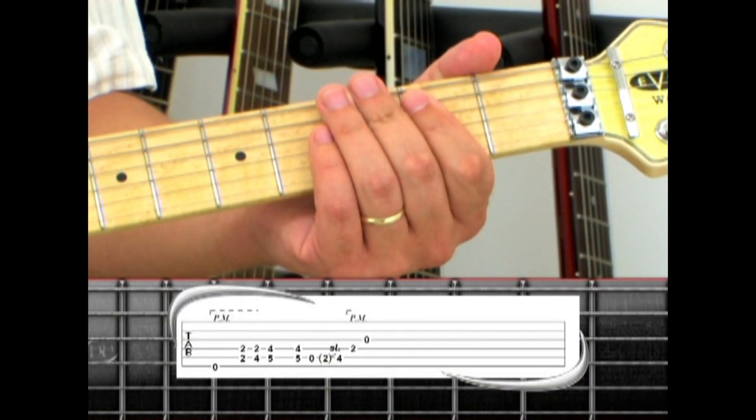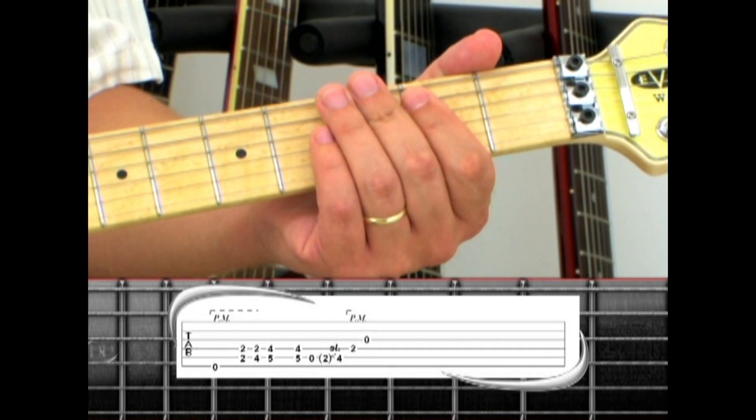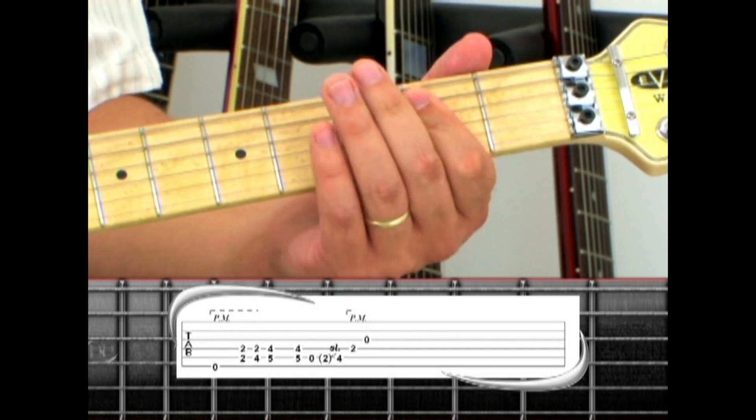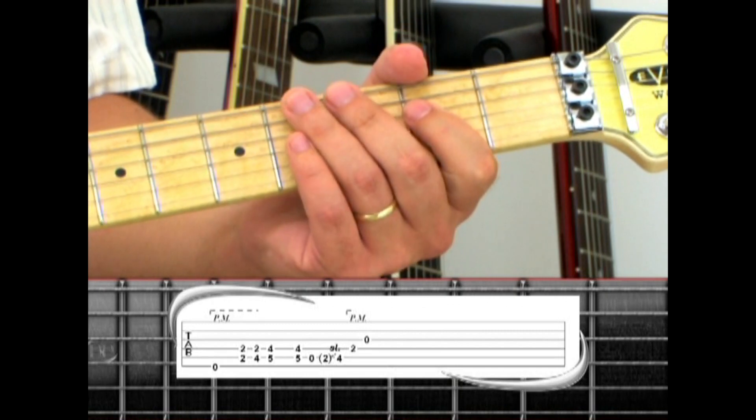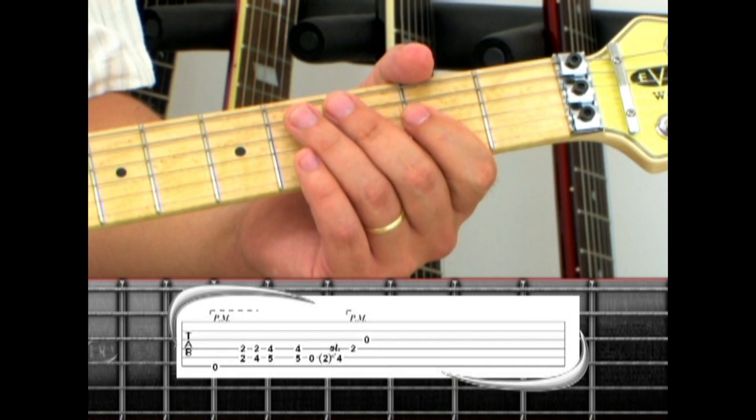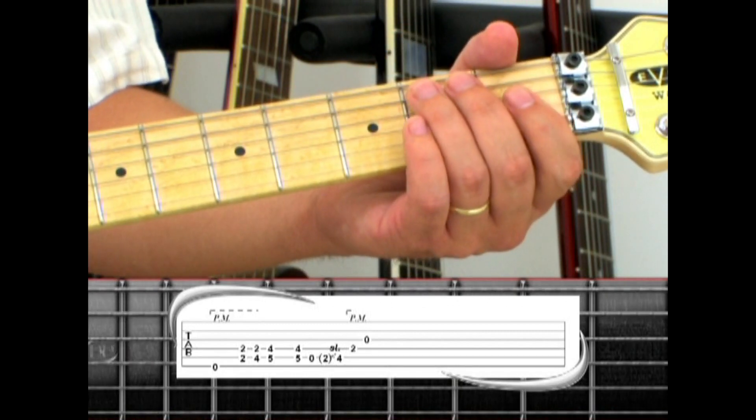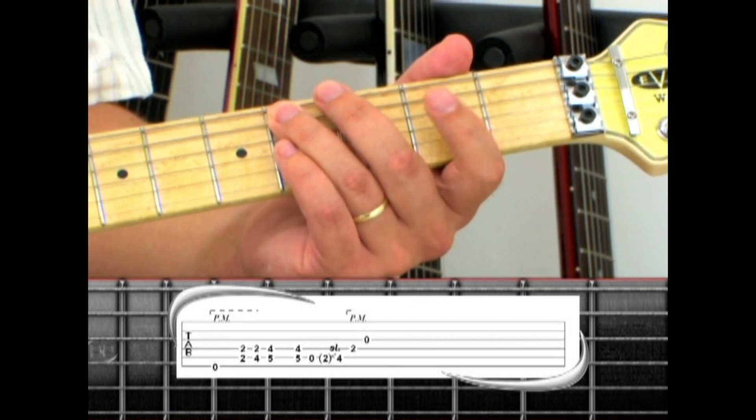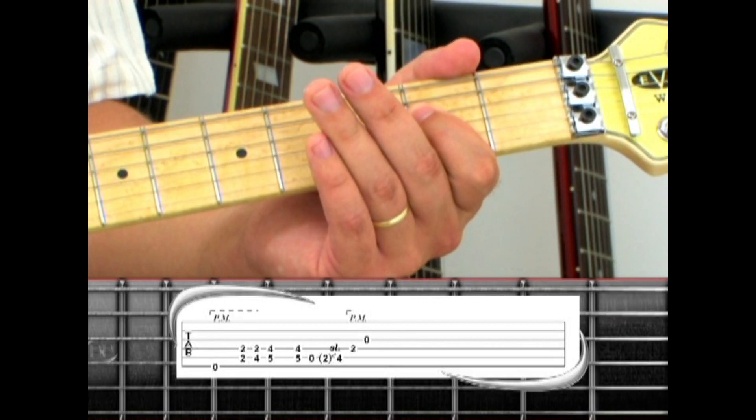The 2nd half of the verse also has a variation. The walk up to D is the same. Then the 5th string open, 2 slide to 4, to 4th string 2, but end on the 3rd string open.